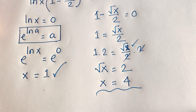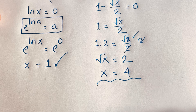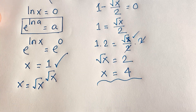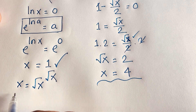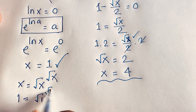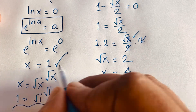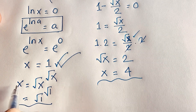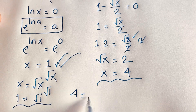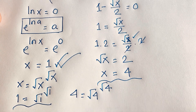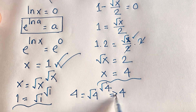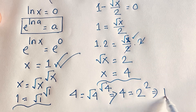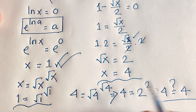Our final answers are x equals one and x equals four. Let's verify. For x equals one: one equals square root one to the power square root one, which is one to the power one, giving one equals one. Correct. For x equals four: four equals square root four to the power square root four, which is two to the power two, giving four equals four. Correct.